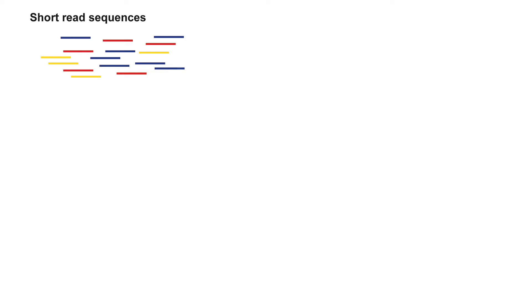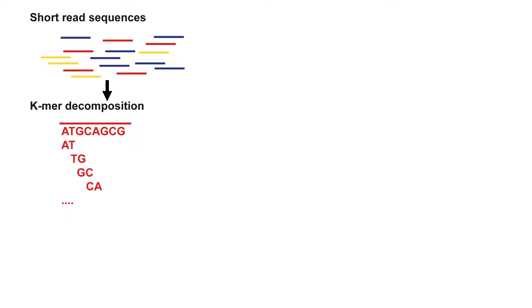De Bruijn graphs are networks that represent overlapping relationships between sequence fragments, called k-mers. The sequences are broken up into fragments of a specified k length. A de Bruijn graph is then constructed from the total set of k-mers from all the sequences, providing a way to represent relationships between the entire set of sequences without pre-calculating the overlaps between them.